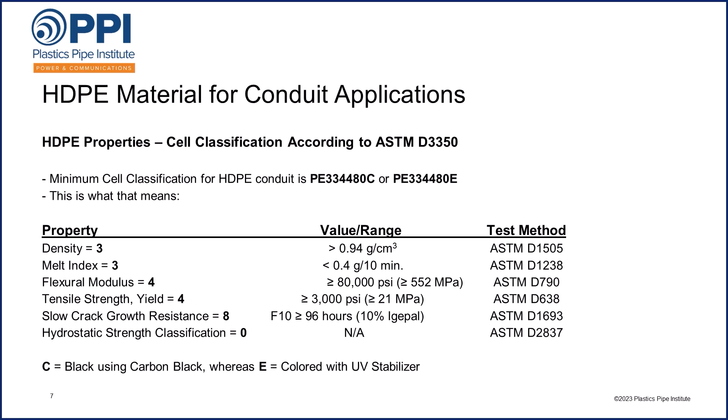The first digit refers to density, the second to melt index, the third to flexural modulus, the fourth to tensile strength at yield, the fifth to slow crack growth resistance, and the sixth and final digit refers to the hydrostatic strength classification. Conduit uses a 0 for the sixth digit, as this is exclusively for use with pressure pipe materials. Finally, the letters C or E are added at the end and refer to how UV resistance is achieved. C refers to the use of carbon black in a black product, and E refers to products which are colored with UV stabilizers built into the compound.